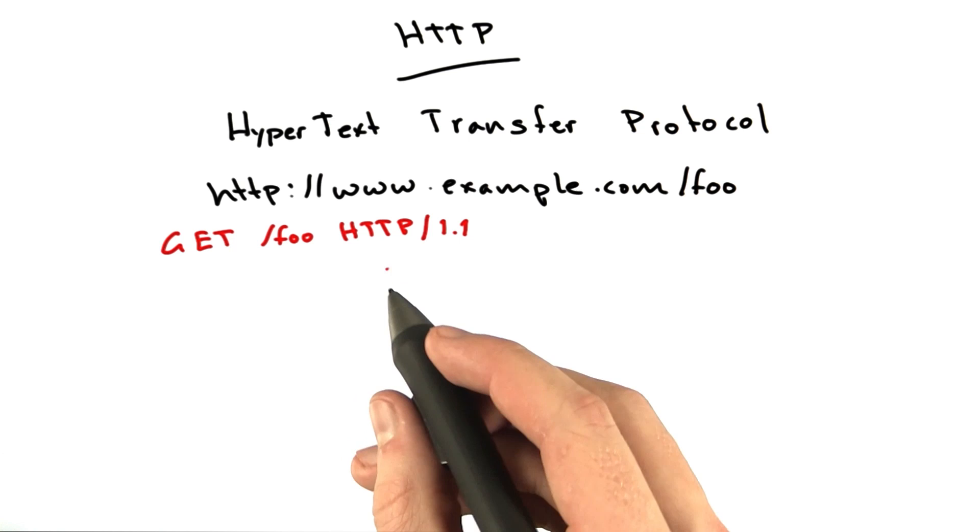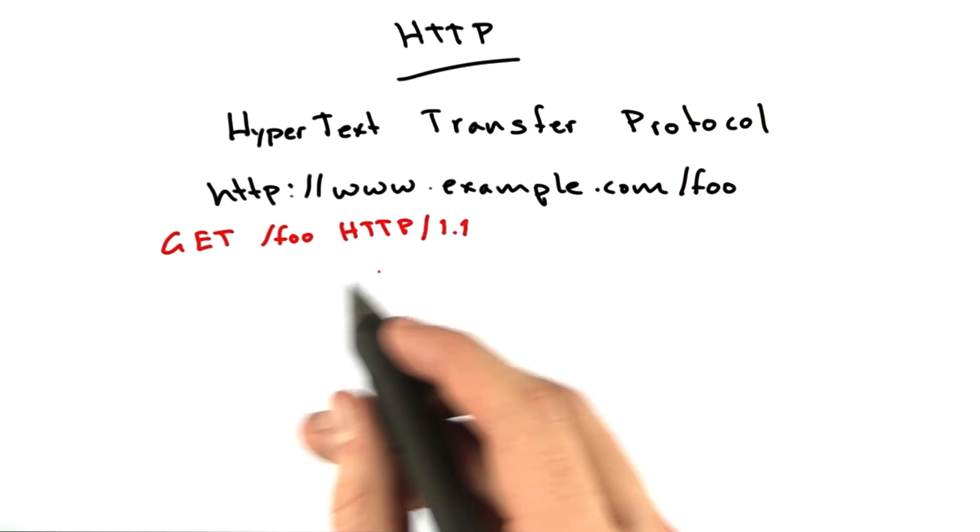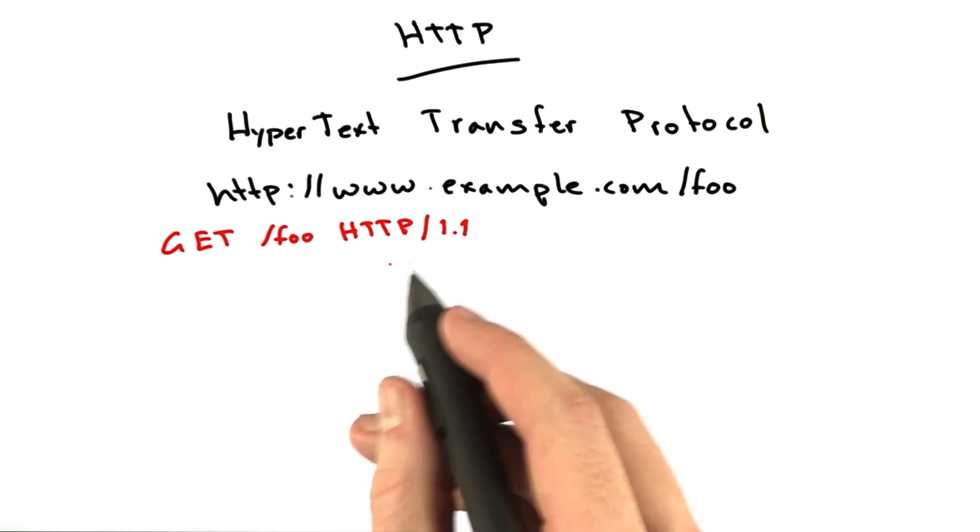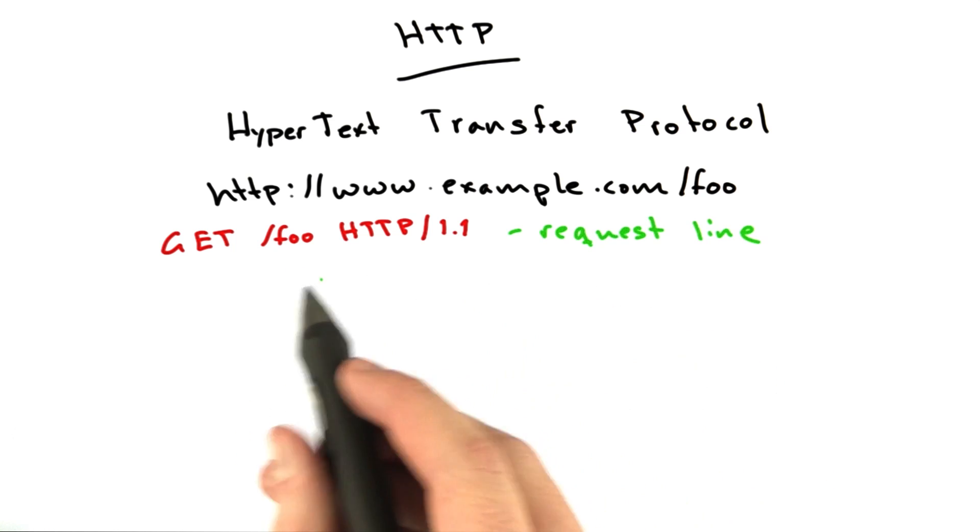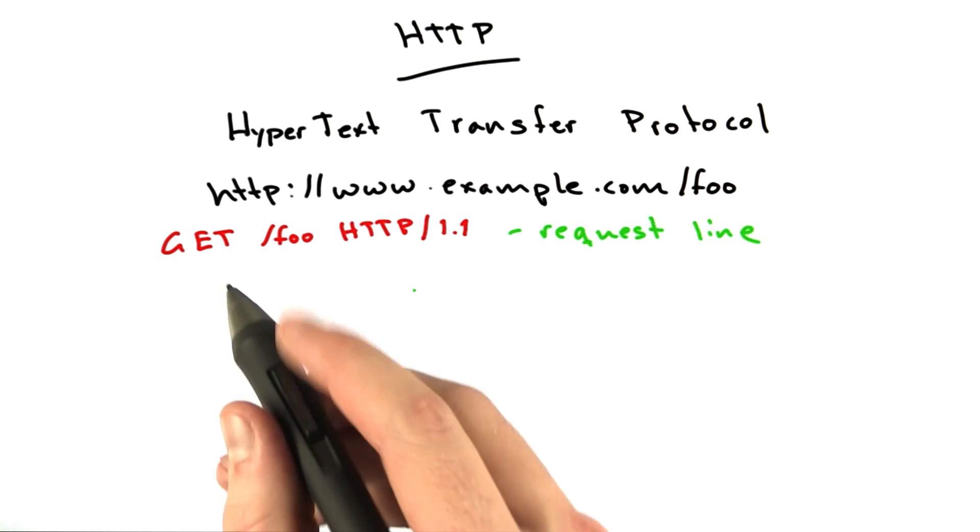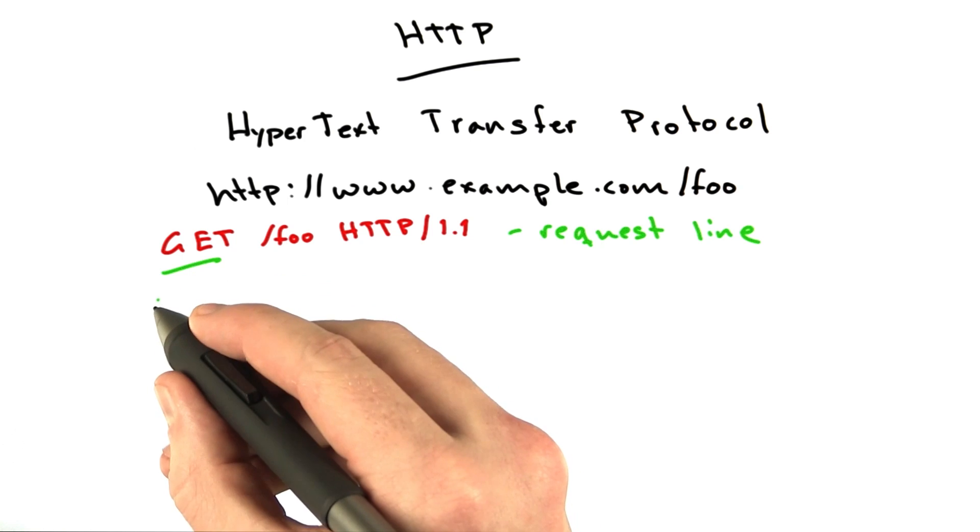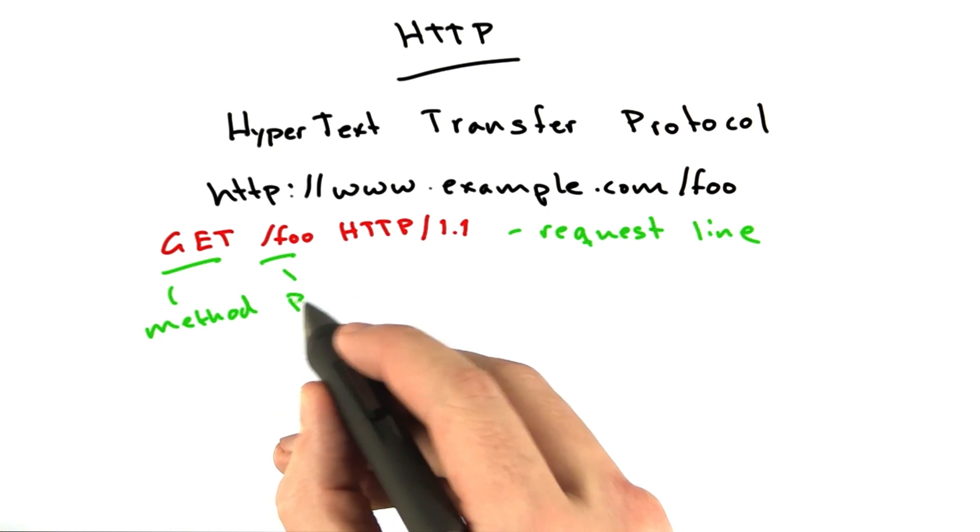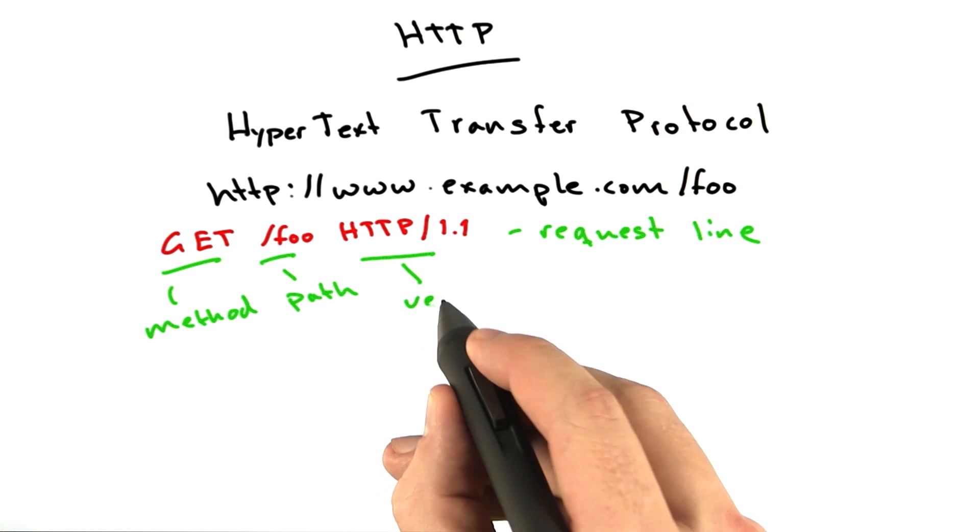Now, HTTP is a very simple text protocol. So this text is sent over the Internet to the server just like this. It's human readable too. The request line has three main parts. First is the method. Next is the path. And finally is the version.